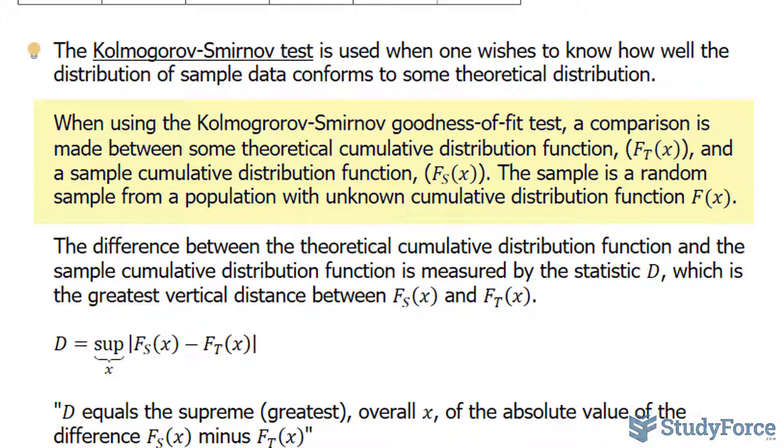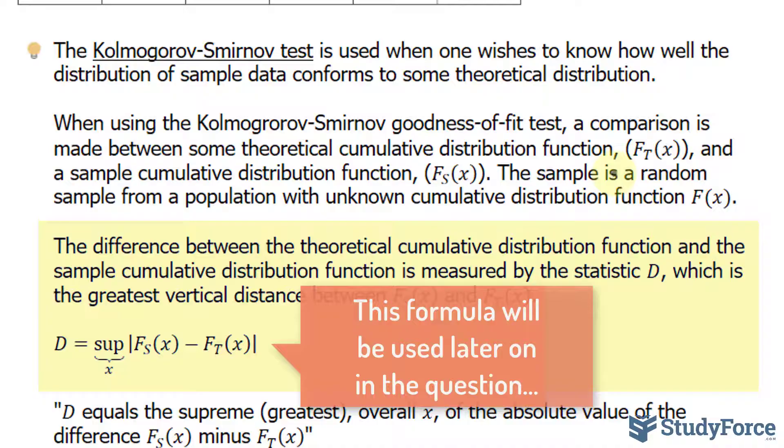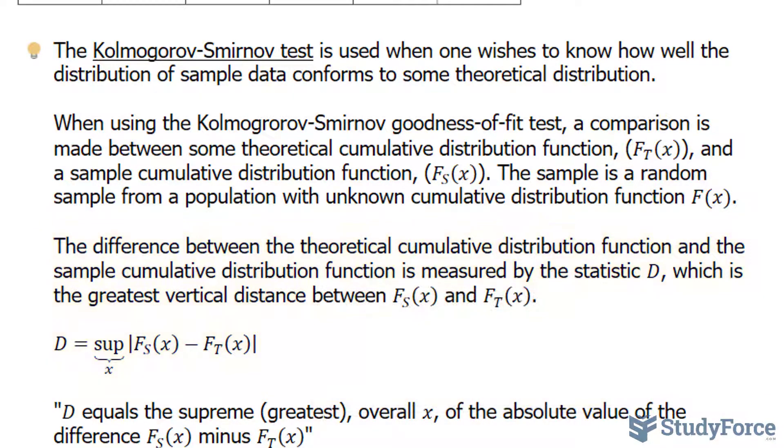When using the Kolmogorov-Smirnov Goodness-of-Fit test, a comparison is made between some theoretical cumulative distribution function and a sample cumulative distribution function. The sample is a random sample from a population with unknown cumulative distribution function F(x). The difference between the theoretical cumulative distribution function and the sample cumulative distribution function is measured by the statistic D, which is the greatest vertical distance between F_s and F_t. Let's go ahead and read the question.